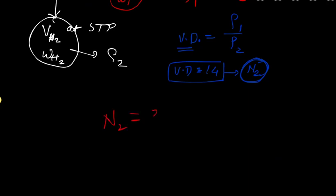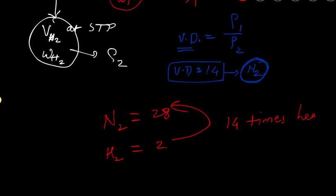Intuitively, N₂ has a molecular mass of 28 and hydrogen has a molecular mass of 2, so nitrogen is 14 times heavier than hydrogen. That's exactly why the formula gives VD = 14 for nitrogen.